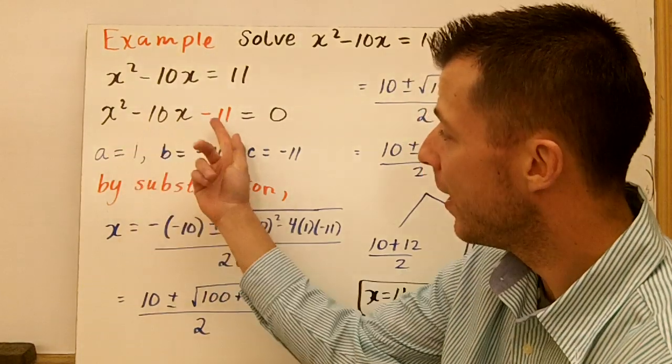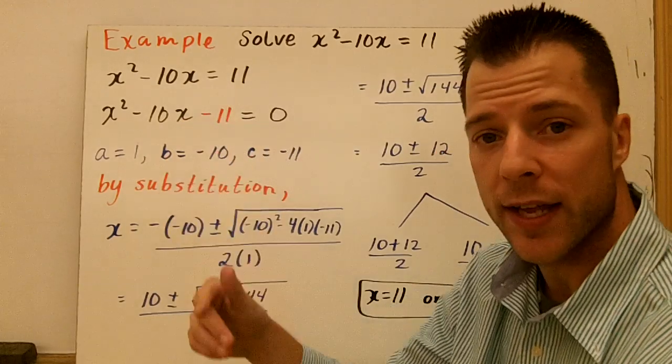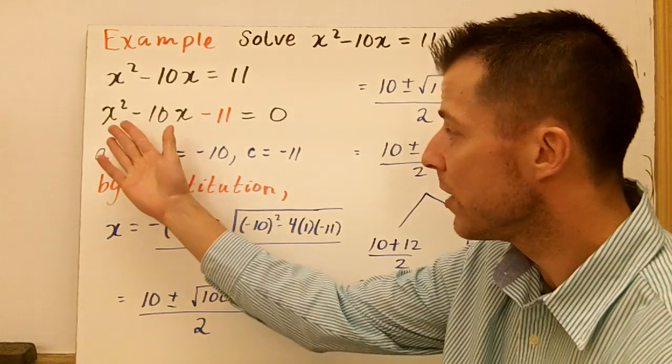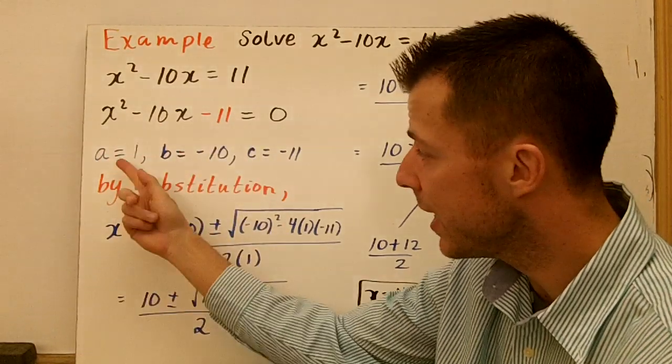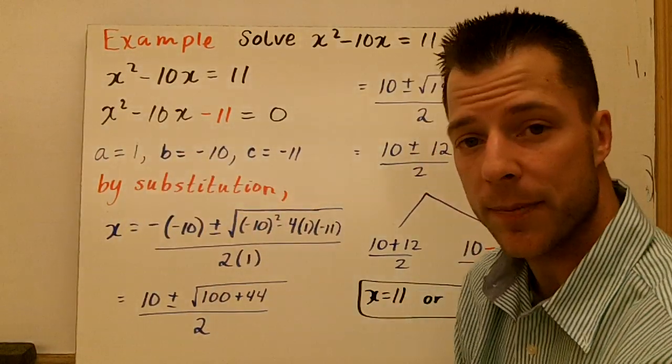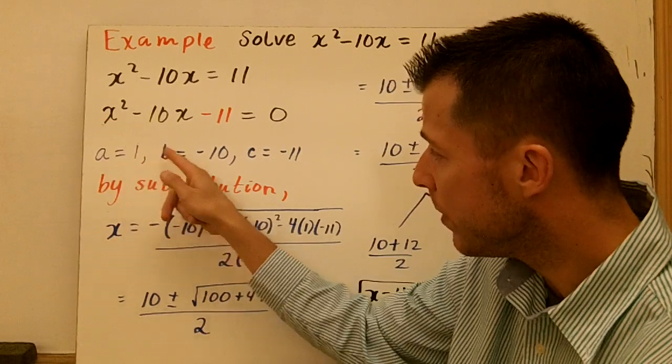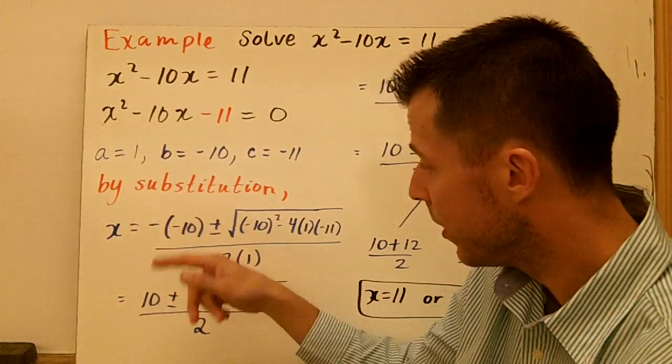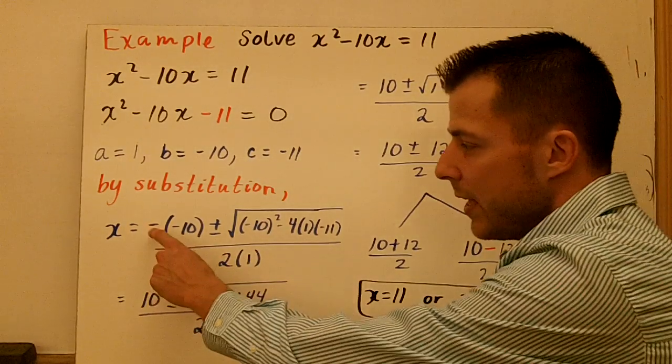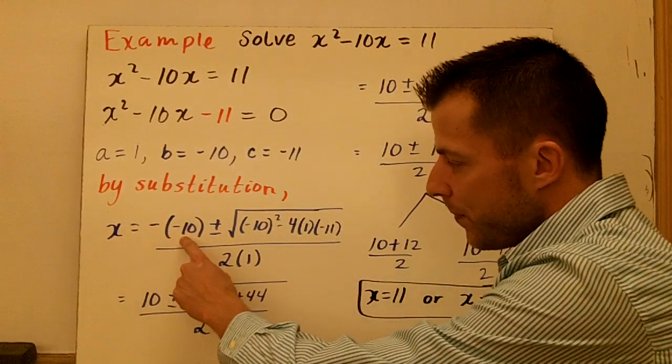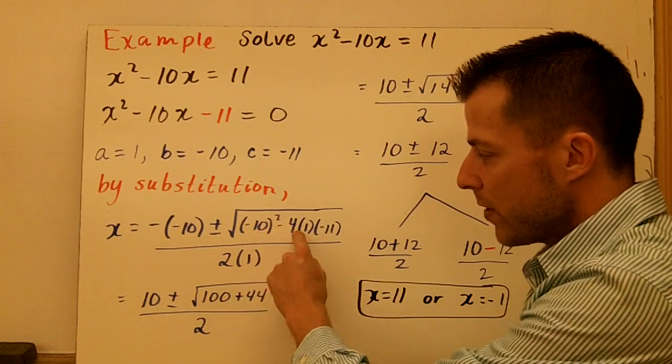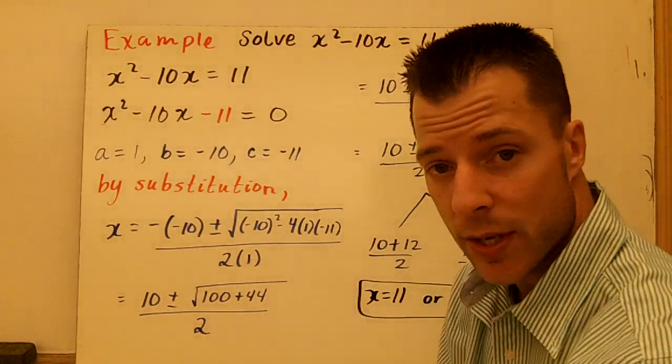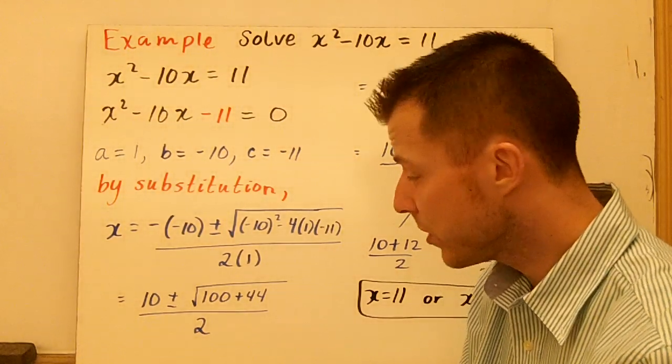In red here, you see I've just brought the 11 over, and that's equal to 0 now. So now I've got the quadratic on one side. I've identified my A, B, and C. A is 1, B is negative 10, and C is negative 11. Now let's substitute into the quadratic formula: the opposite of B plus or minus the square root of B squared minus 4AC, all divided by 2A. So there's the substitution. Now, you simplify.